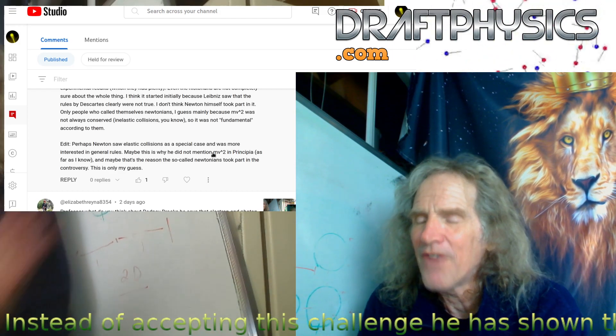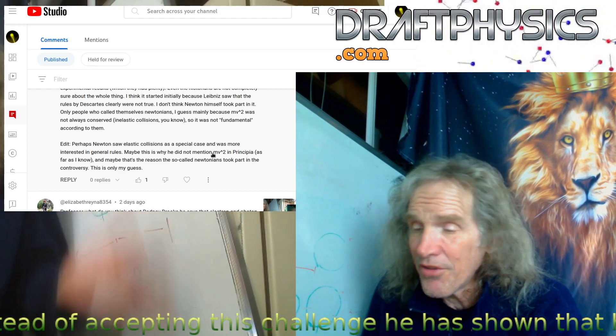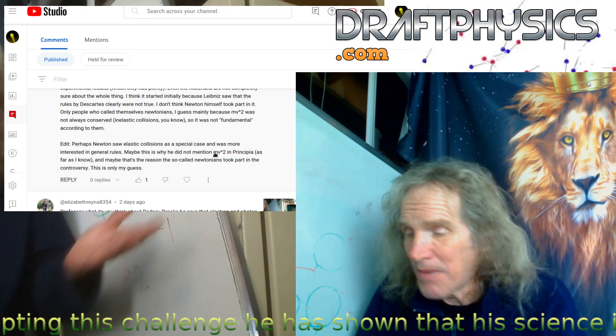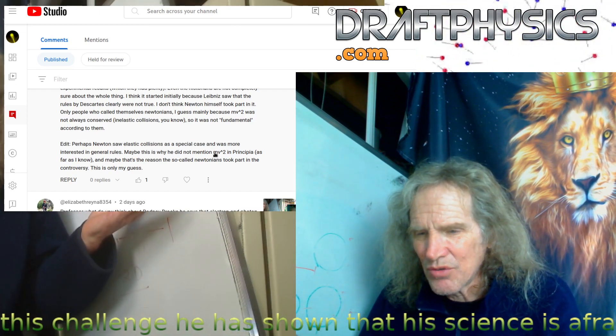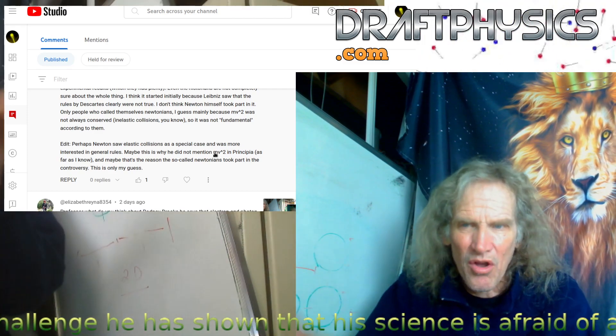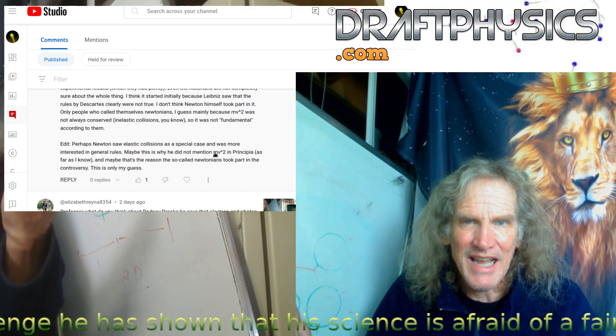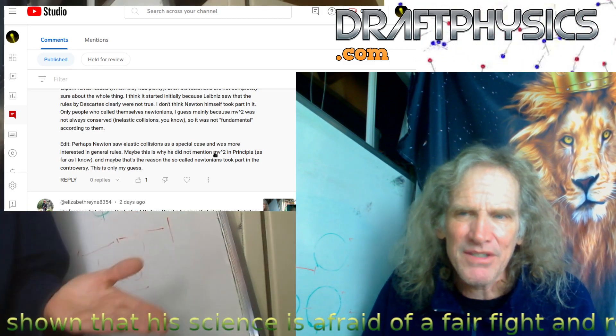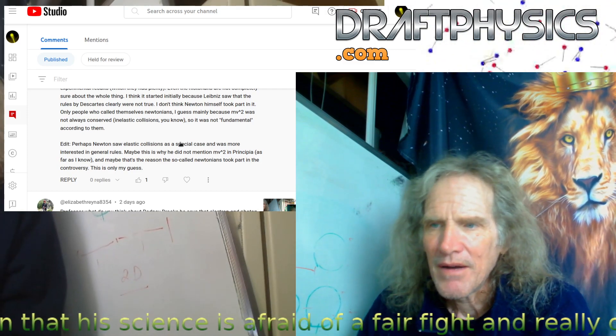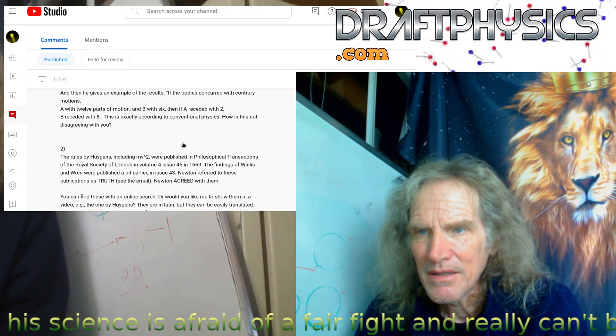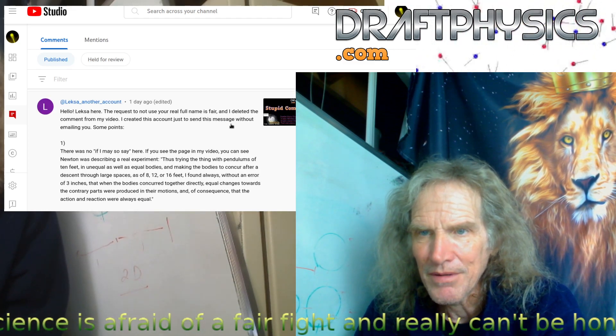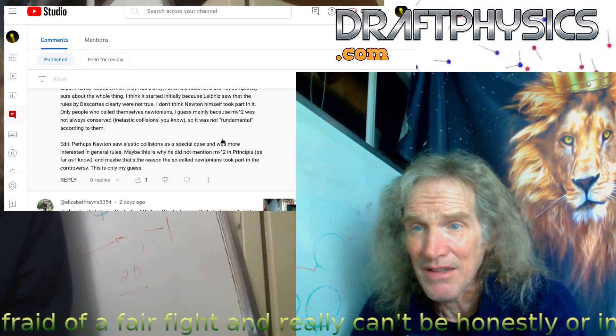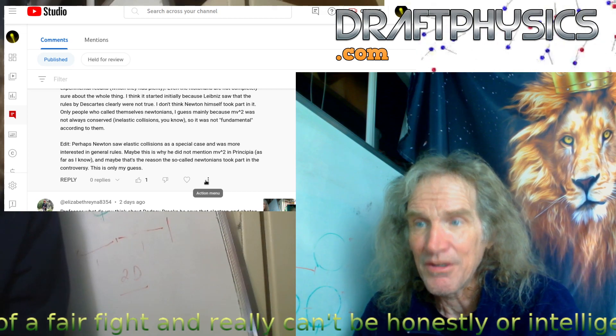Perhaps Newton saw elastic collisions as a special case and was more interested in general. Why wouldn't he say that? Why wouldn't he just say fuck the second law, fuck the third law? The third law is fucked by your silly MV squared nonsense, because by the third law the bullet has 2,000 joules and the gun recoil has two. That's your law. Your law says that's what happens. How is that an equal and opposite reaction? 2,000 watts and 2 watts - how is that equal and opposite? Just do not bother me with this flat earth crap. You want to believe there's no controversy. They're completely different theories of reality, you dumb motherfucker.